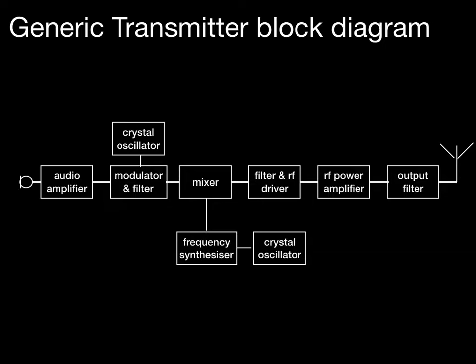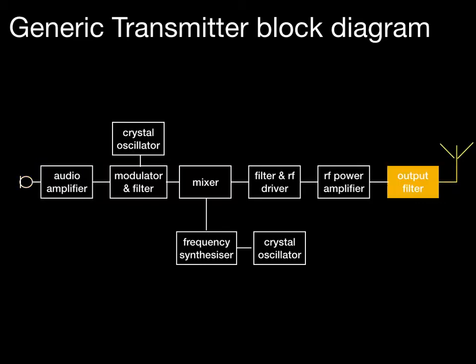To help you do this, there are a couple of boxes you can eliminate from having to remember. First, on the extreme left you have a microphone, and a microphone will obviously always be connected to an audio amplifier — that should be fairly easy to remember. On the right-hand side you have the antenna, and just before the antenna is always the output filter, which is there to prevent any harmonics or spurious out-of-band signals being transmitted to air.